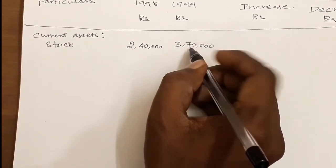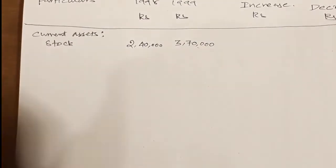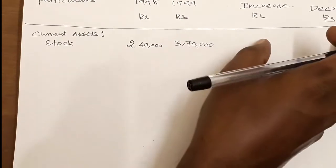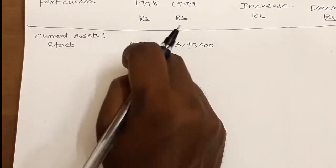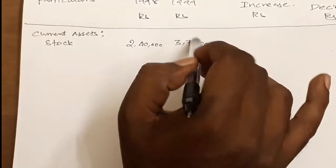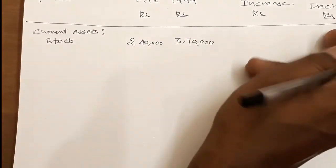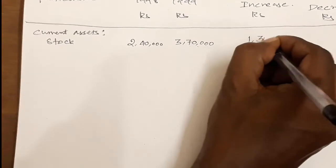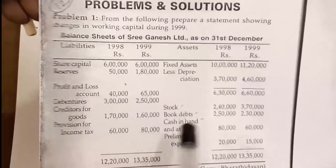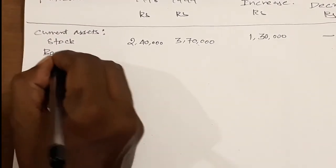I will show you how the amounts are filled in. The income amount is around 1,50,000. For current assets, here is the book debts figure — 2,50,000 for 1998 and 2,30,000 for 1999.